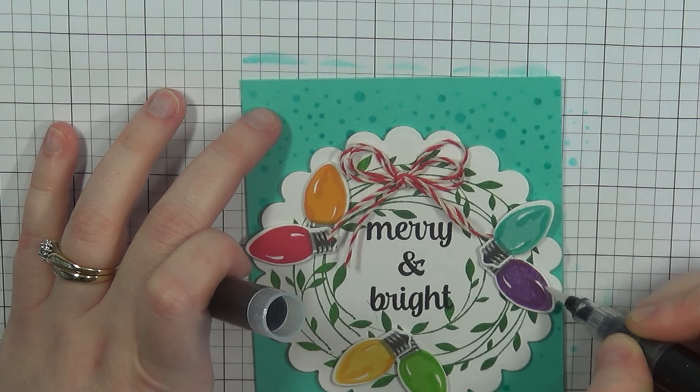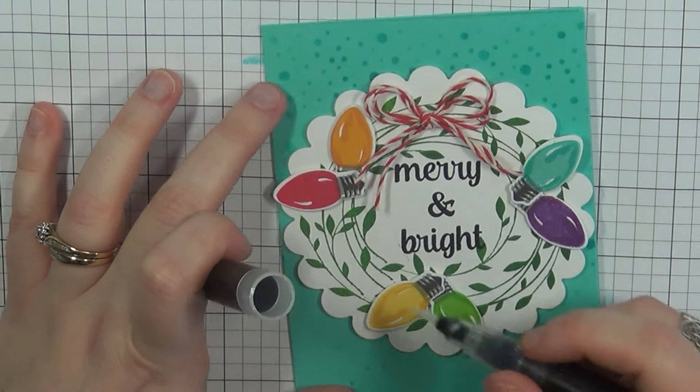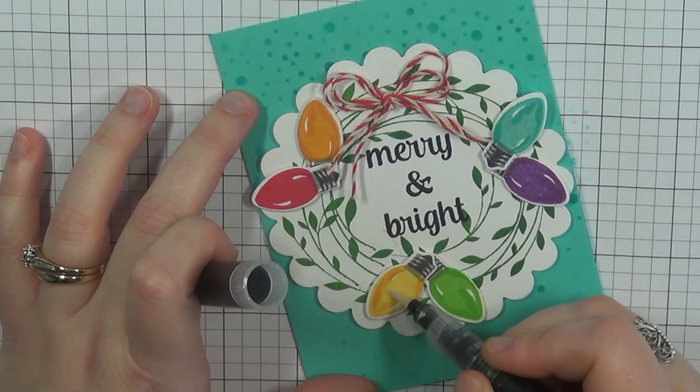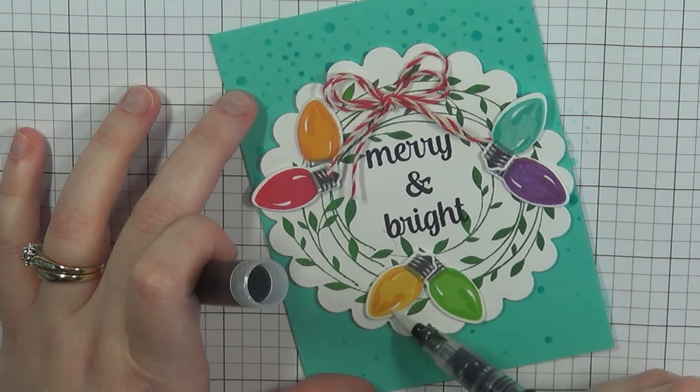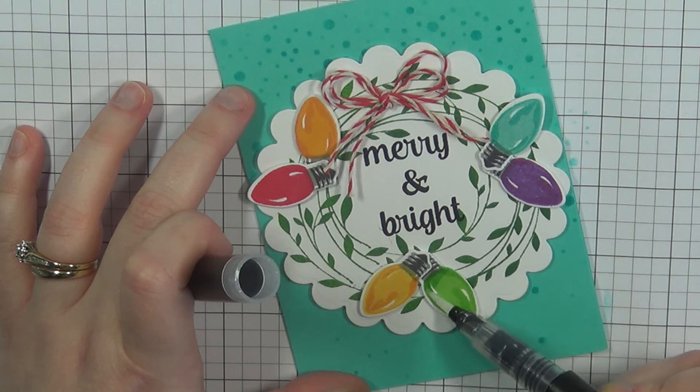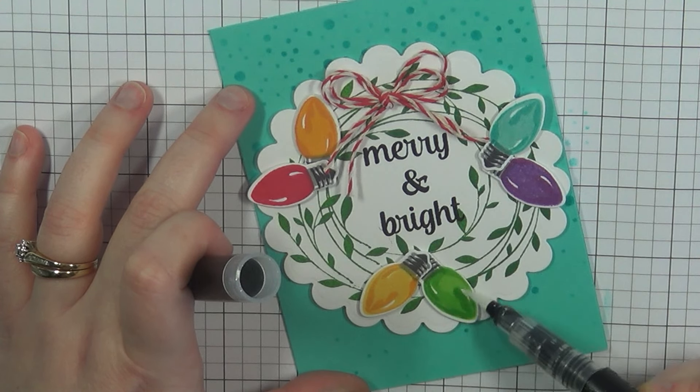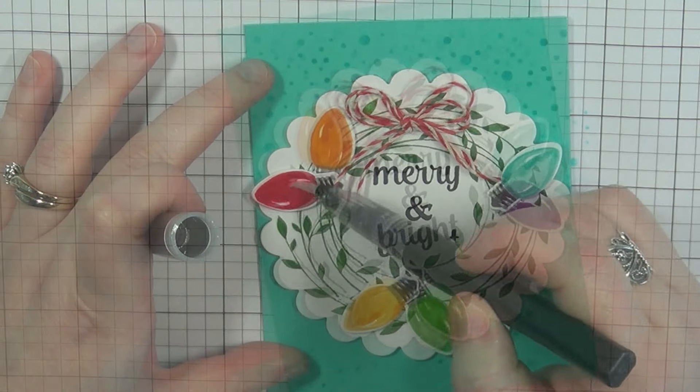So I like the double bow on this. I thought it really added to the design. And for a final touch I'm going to take my Spectrum Noir glitter pen here. I don't usually use this one. I usually use the Wink of Stella but I thought I would give this one a go for today and give a lot of shimmer to those lights and add some really fun shimmer.